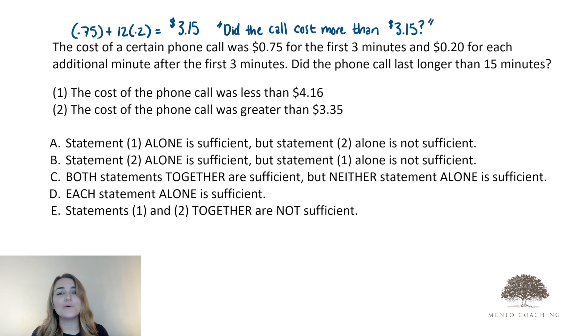And now we can pretty quickly see that in our statements, well, statement one still gives us both yes answers and no answers in our range. But with statement two, if the cost of the phone call was greater than $3.35, then definitively, yes, the cost was greater than $3.15.